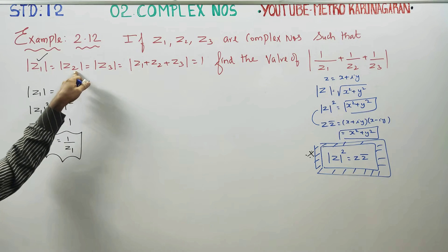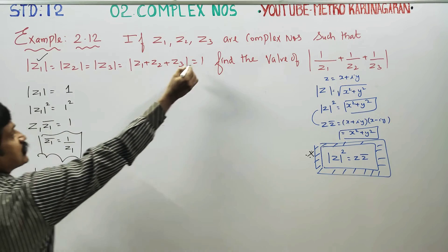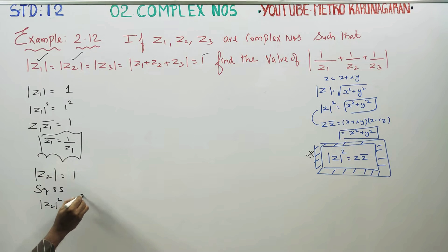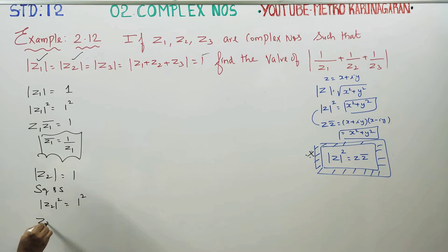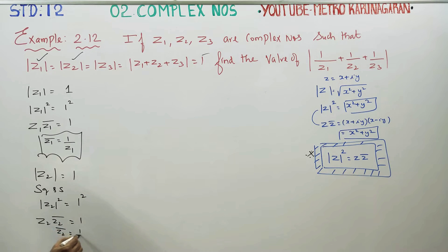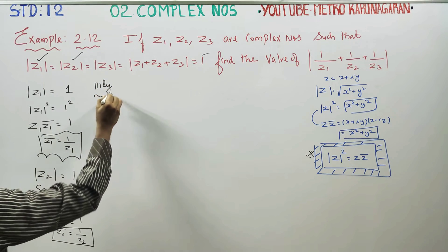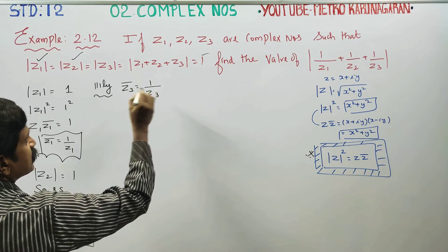That is the second result. What is my second? Z2 modulus. The modulus of Z2 is also equal to 1. Squaring both sides, modulus of Z2 squared equals 1. Therefore, Z2-conjugate equals 1 by Z2. Similarly, we can write Z3-conjugate is also 1 by Z3.